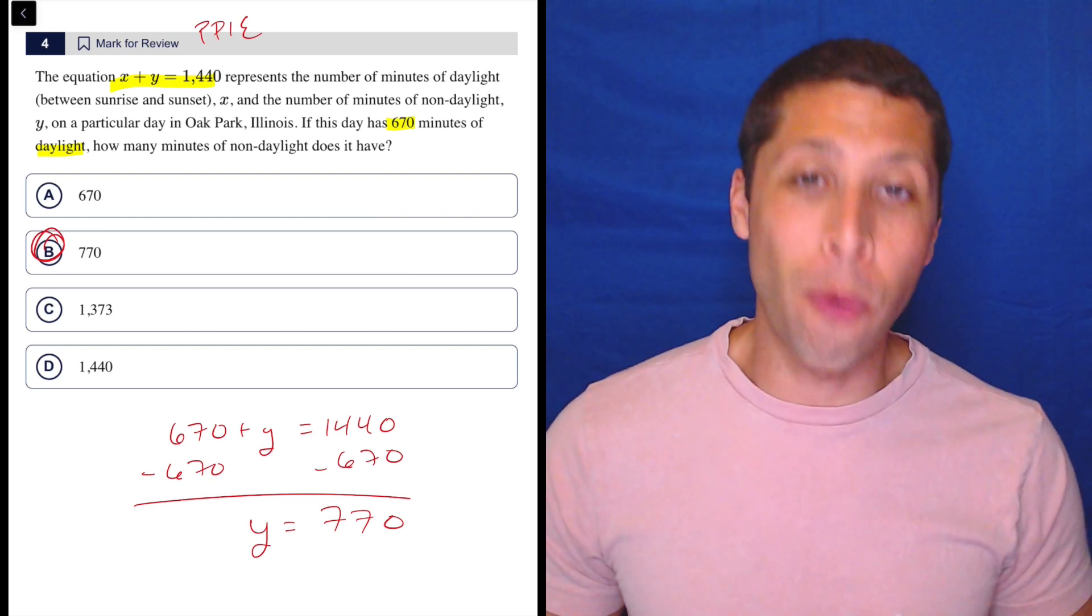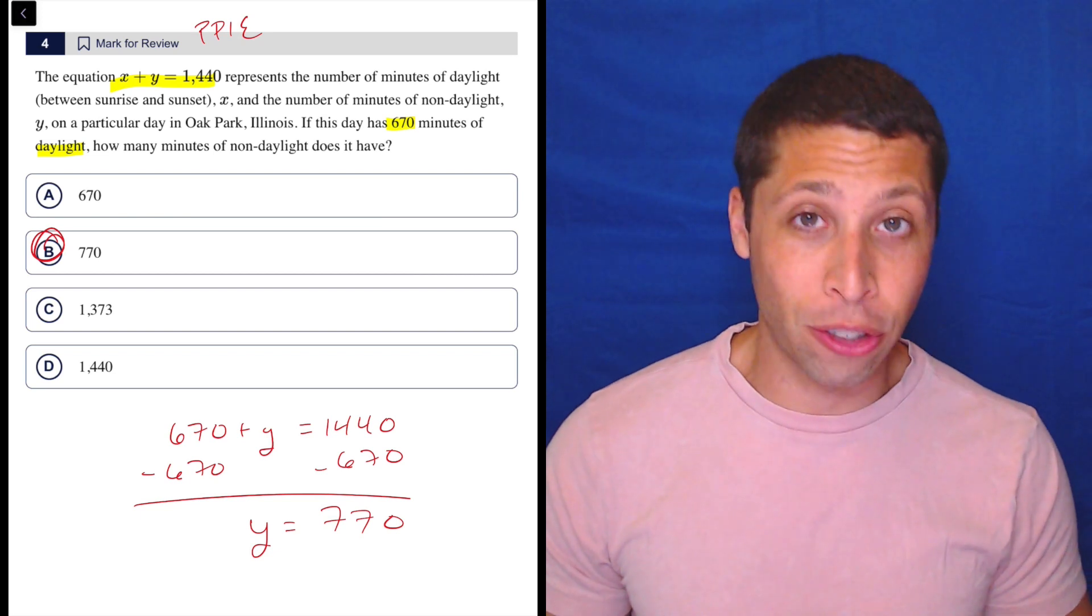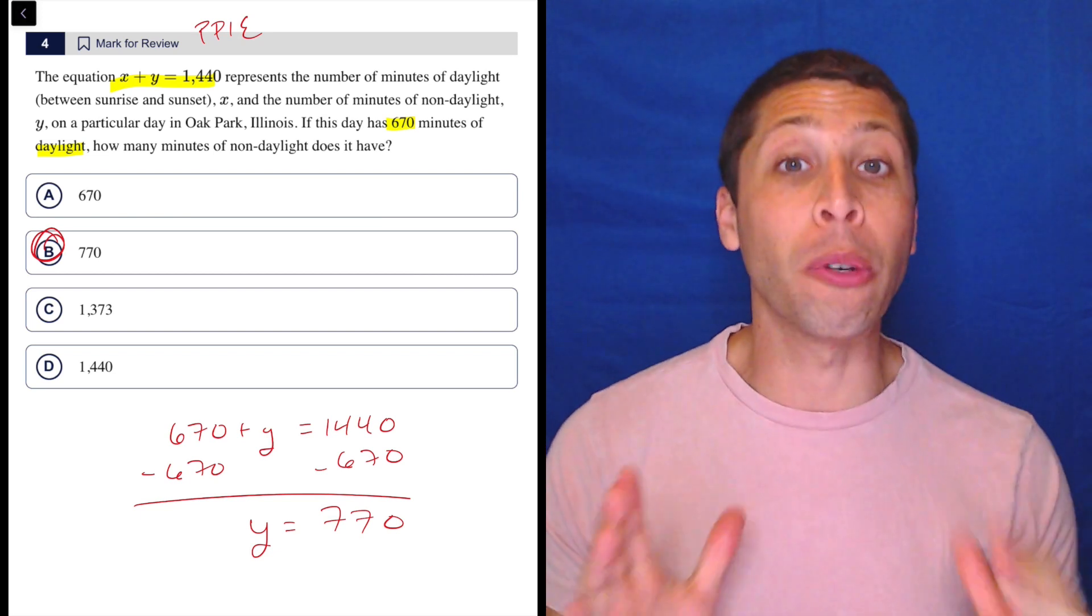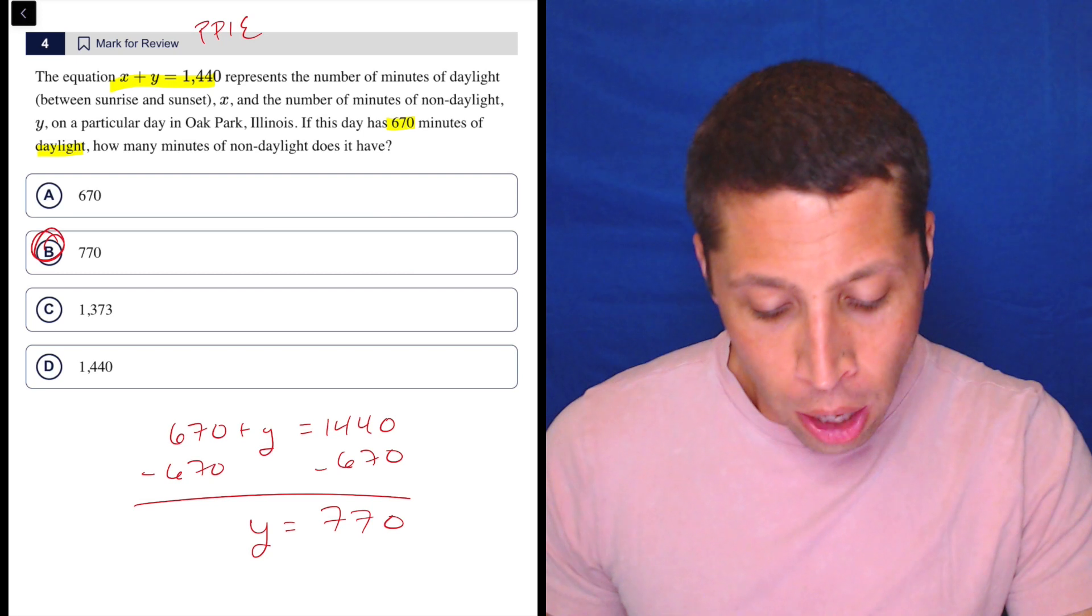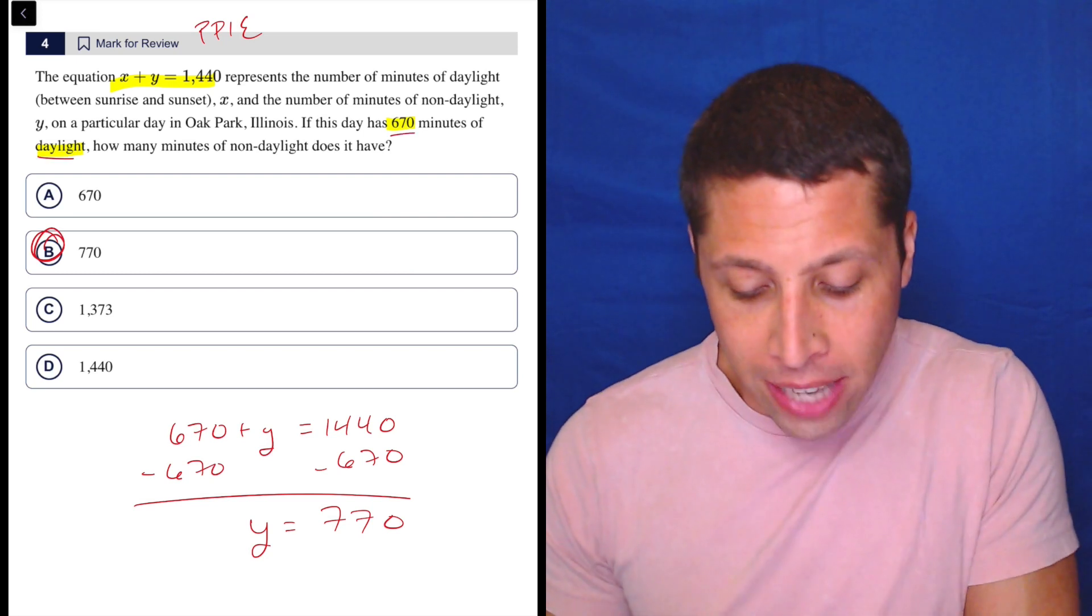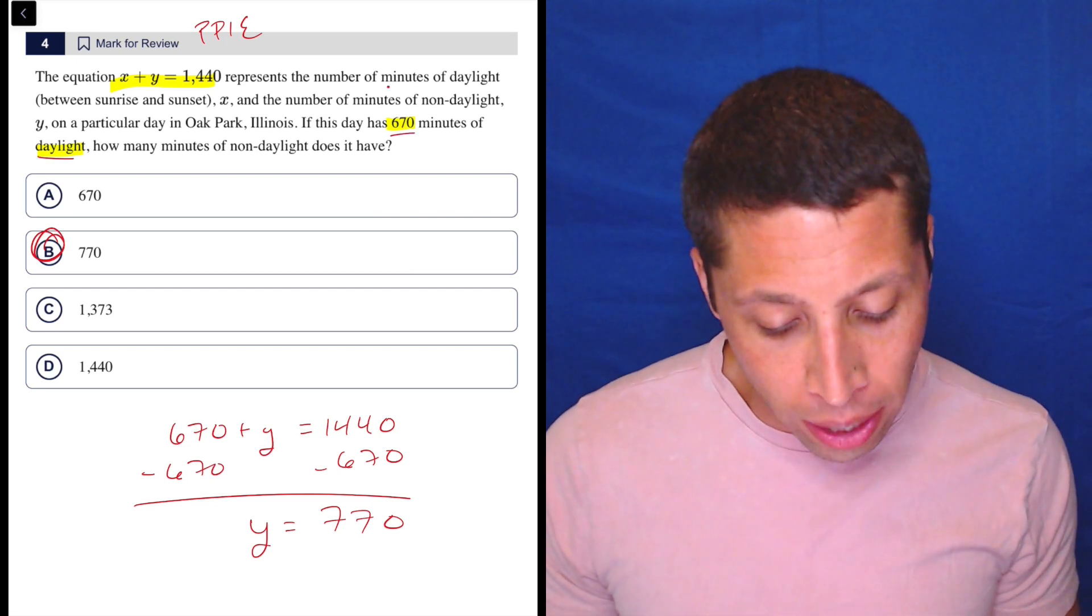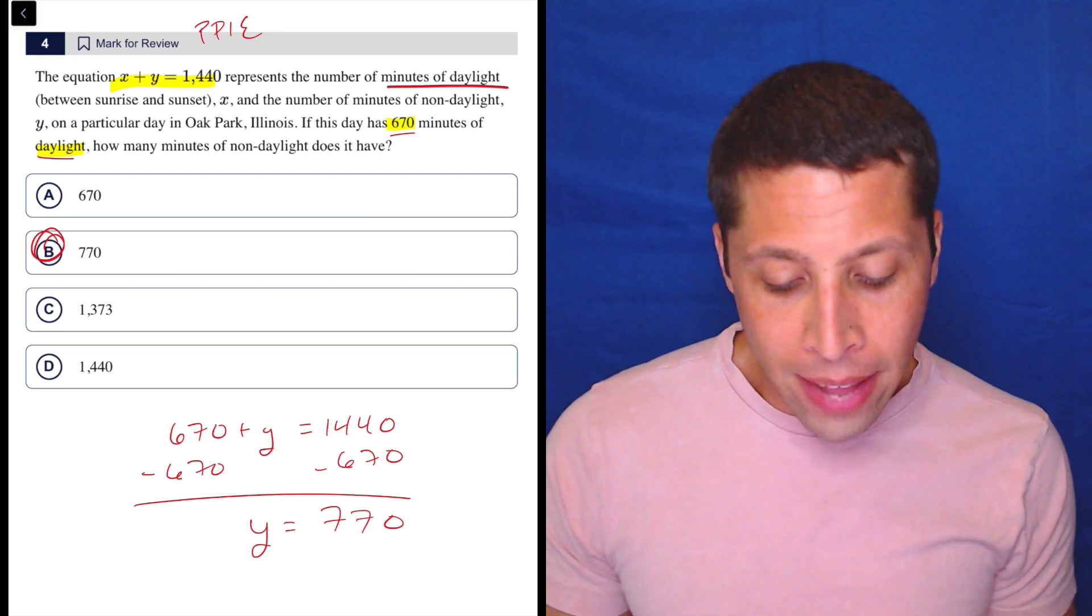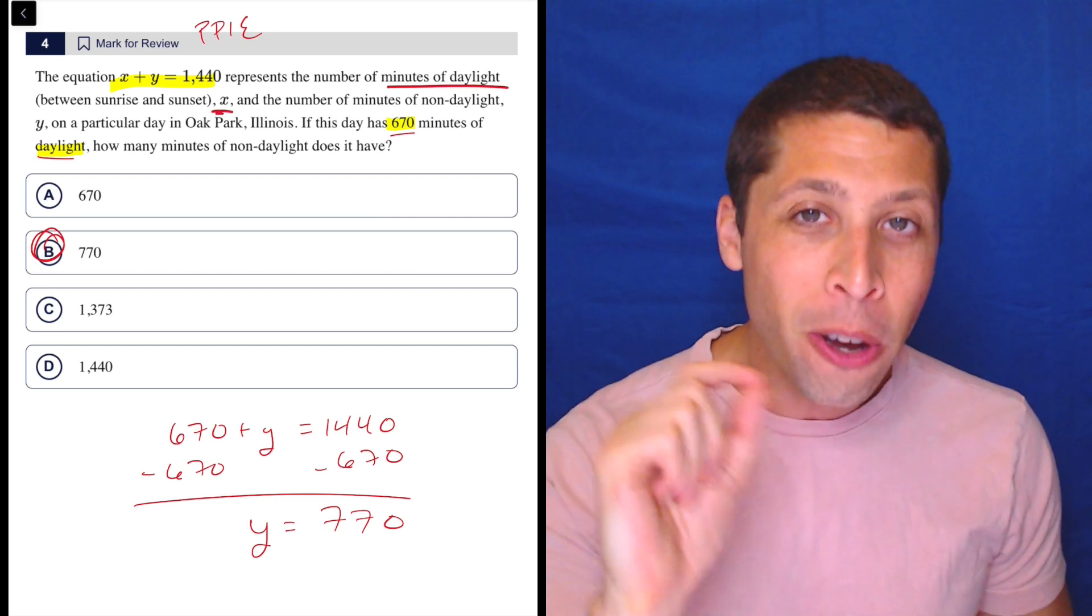But before you go, I do wanna point out one really nasty thing that they did on this question that, again, doesn't matter for this question, but will certainly matter for others. We had to figure out what this 670 was. It's the minutes of daylight, and we can go, and we can say, okay, minutes of daylight is right here, and that's leading to the X. But notice what they did, right?